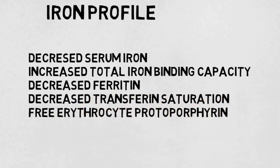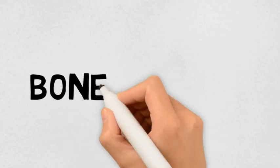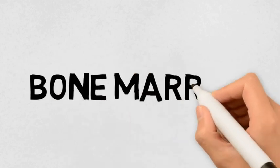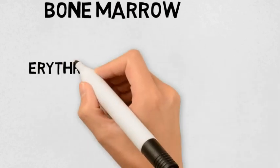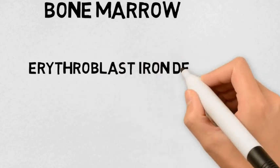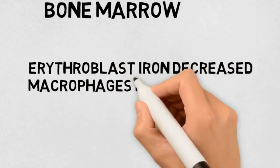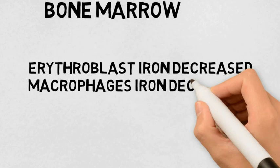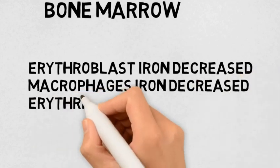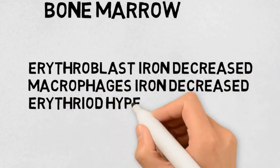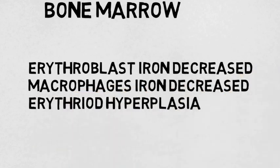In bone marrow examination, erythroblast iron will be decreased — erythroblasts are the precursors from which erythrocytes are formed. Macrophage iron also decreases, and erythroid hyperplasia occurs so that more erythrocytes are formed.